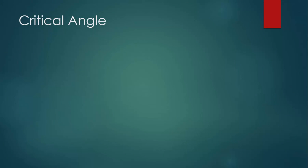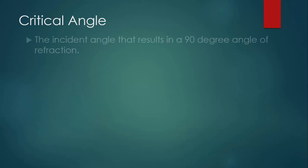There's a particular angle involved in refraction that's called the critical angle. This is the incident angle that results in a 90 degree angle of refraction. There's only a critical angle for a ray of light traveling from a material with a larger index of refraction to a material of a smaller index of refraction.